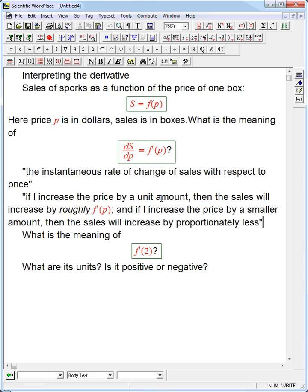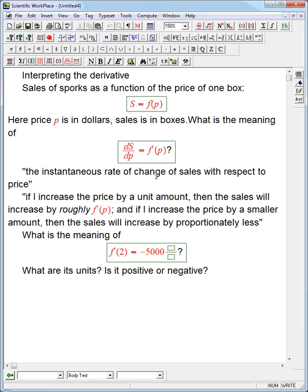So if I increase the price by a half, roughly I'm going to get this amount of increase in the price. For example, let's look at something very explicit. Suppose I know that f prime of 2 equals negative 5,000. What does that mean? First of all, it's not even correct if I don't put units. f prime of 2 negative 5,000 what?